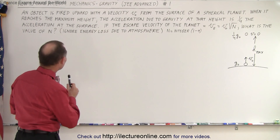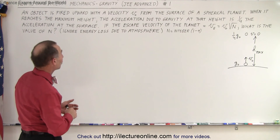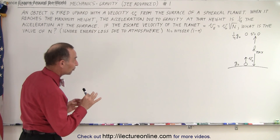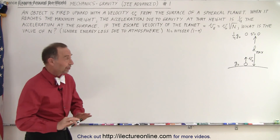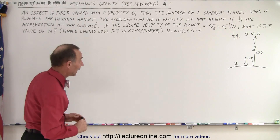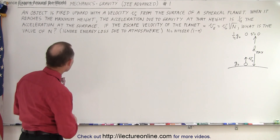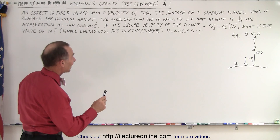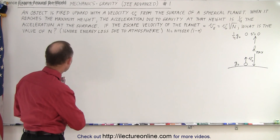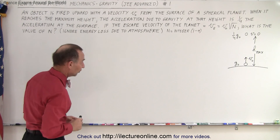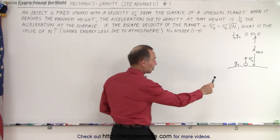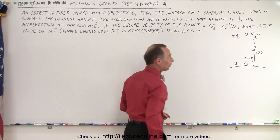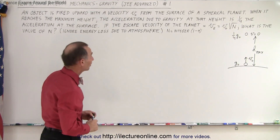An object is fired upward with a velocity v-sub-naught from the surface of a spherical planet — it doesn't have to be Earth, it's some planet. When it reaches the maximum height, the acceleration due to gravity at that height is one-quarter the acceleration at the surface. So g-sub-naught at the surface, and one-quarter that at maximum height.